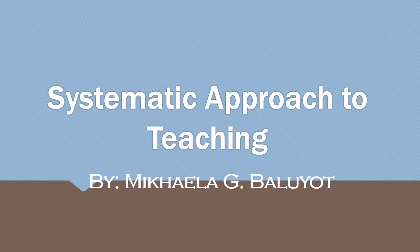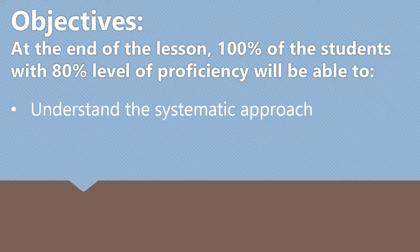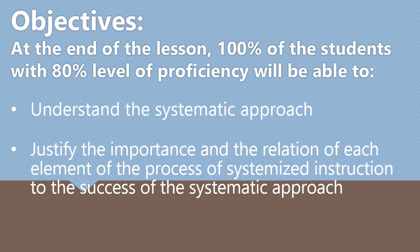Systematic Approach to Teaching. Objectives: At the end of the lesson, 100% of the students with 80% level of proficiency will be able to understand the systematic approach and justify the importance and the relation of each element of the process of systemized instruction to the success of the systematic approach.